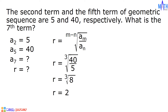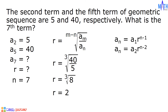After finding the common ratio, let us find the seventh term using the formula for the nth term of a geometric sequence: A sub N equals A sub 1 times R raised to N minus 1. Since we do not have the value of A sub 1, we use A sub N equals A sub 2 times R raised to N minus 2. Since we are looking for A sub 7, N equals 7, R equals 2, and the exponent is 7 minus 2, which equals 5.